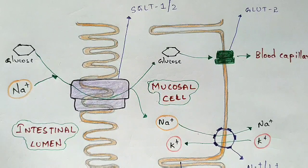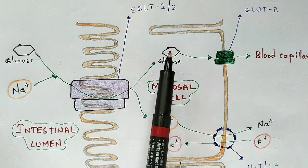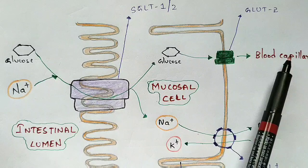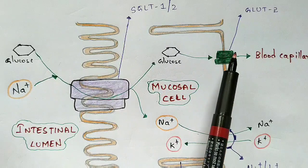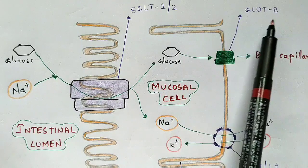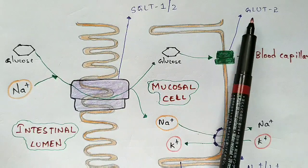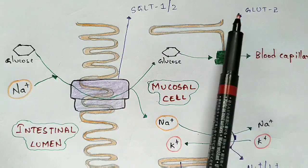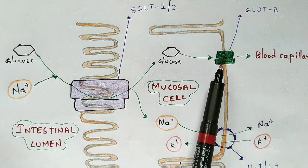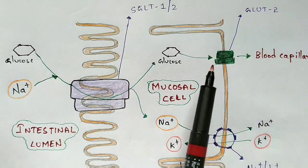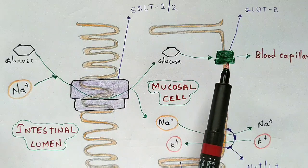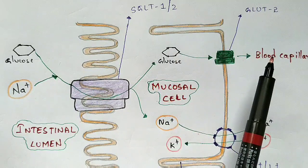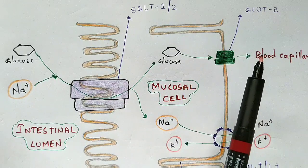Once glucose and sodium have entered the mucosal cell, the glucose molecule enters the blood capillaries by a process called facilitated diffusion. This process is mediated by the protein carrier GLUT2, the glucose transporter, which carries glucose towards the blood capillaries. Remember: glucose enters the blood by facilitated diffusion.